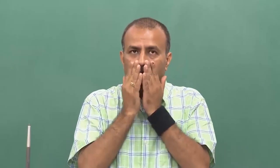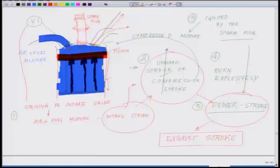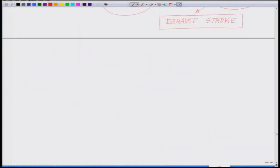Welcome back to the lecture series in Bioenergy. This brings us to two parameters by which engines are described and their efficiency is tested. The first one, most important, is called the compression ratio, and the other one is called displacement.